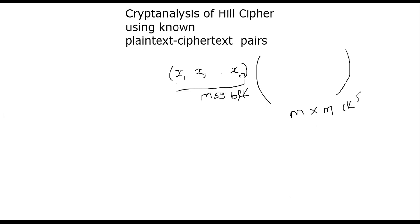What we get is a cipher block. How many elements here? It's going to be y1, y2, all the way up to ym, obviously, because we are dealing with m character block.